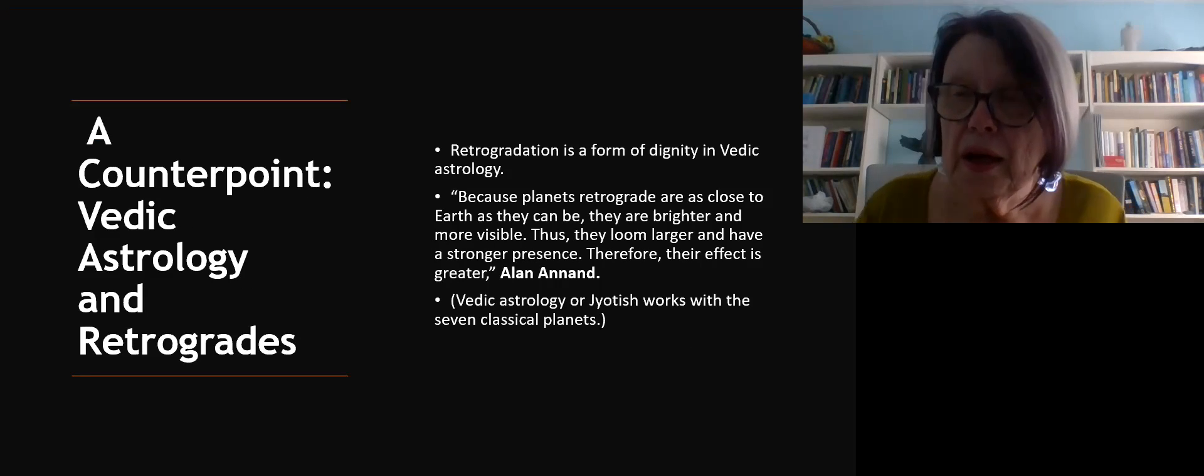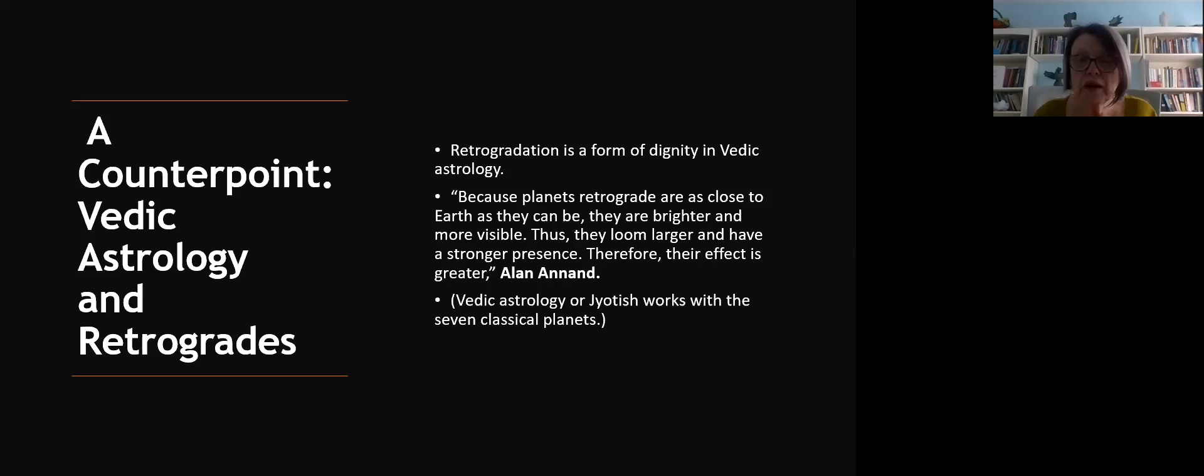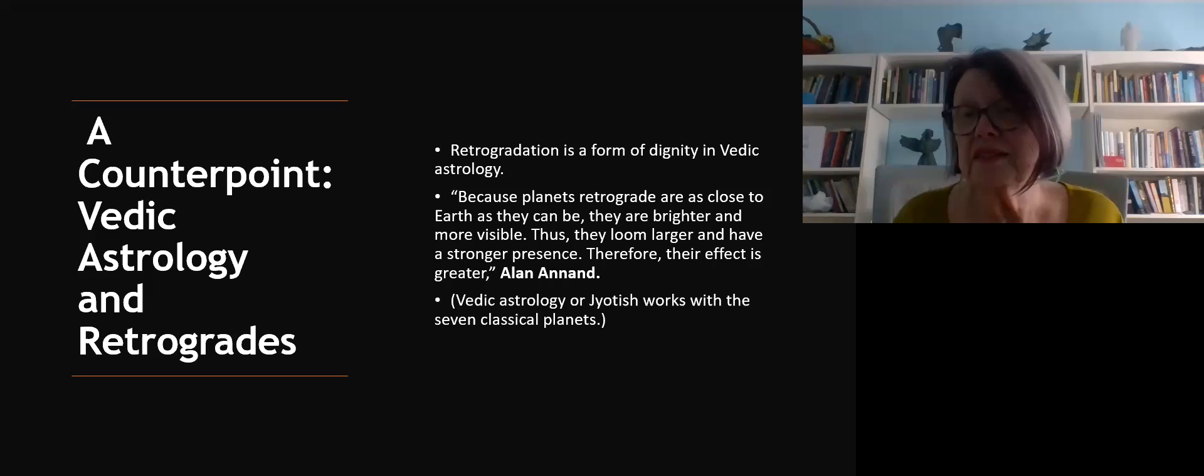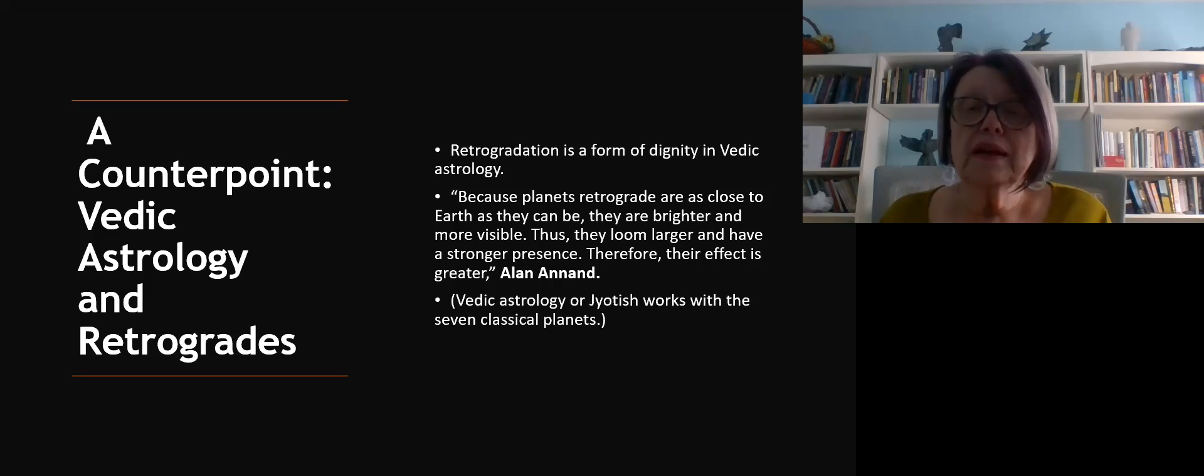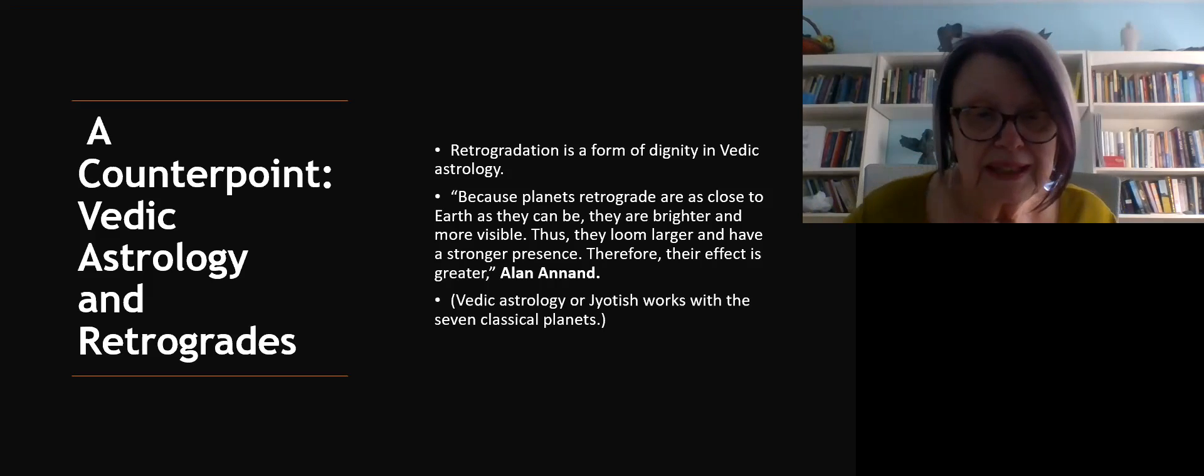I looked at other traditions, including EA, which we'll get to in a second. Vedic astrology sees retrogradation as a form of dignity. Because planets retrograde as close to Earth as they can be, they are brighter and more visible. Thus they loom larger and have a stronger presence. Therefore their effect is greater. I'm quoting Alan Anand, who is a Canadian Vedic astrologer. The business of them being closest to the planet Earth still remains true, and as we're beginning to realize, Uranus actually is visible in the night sky.